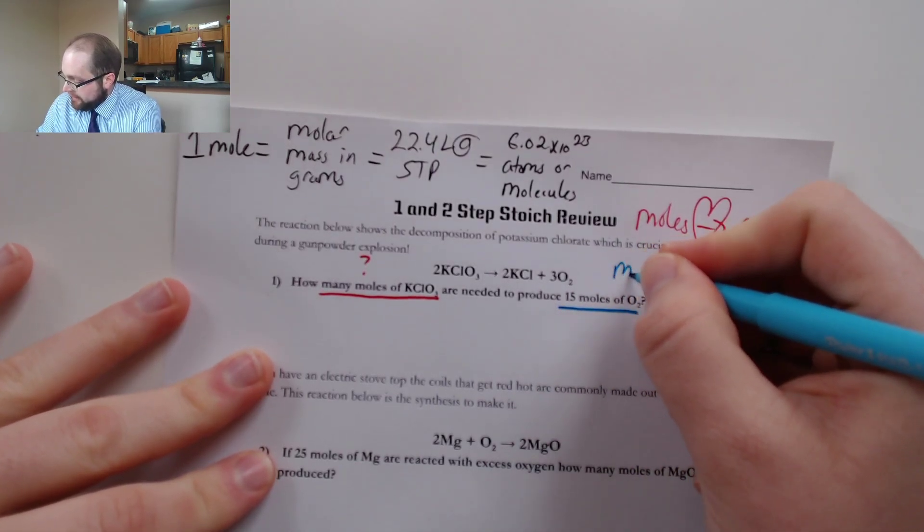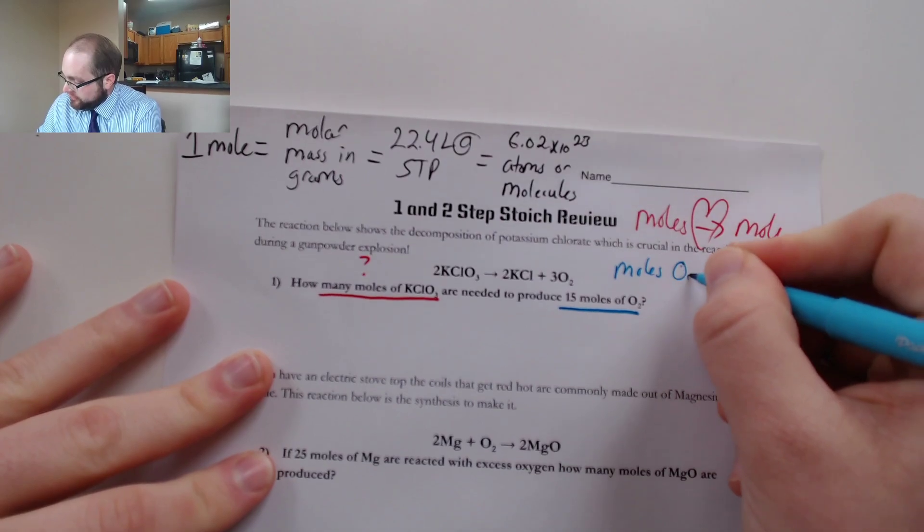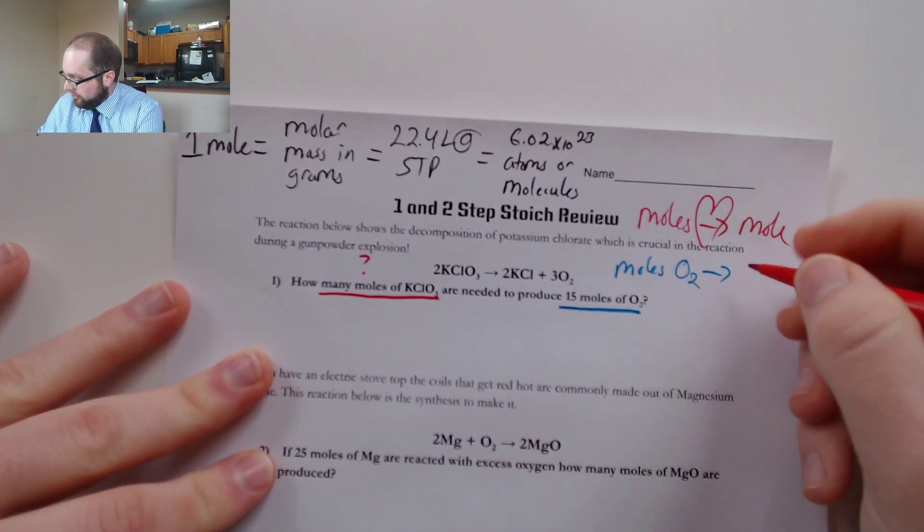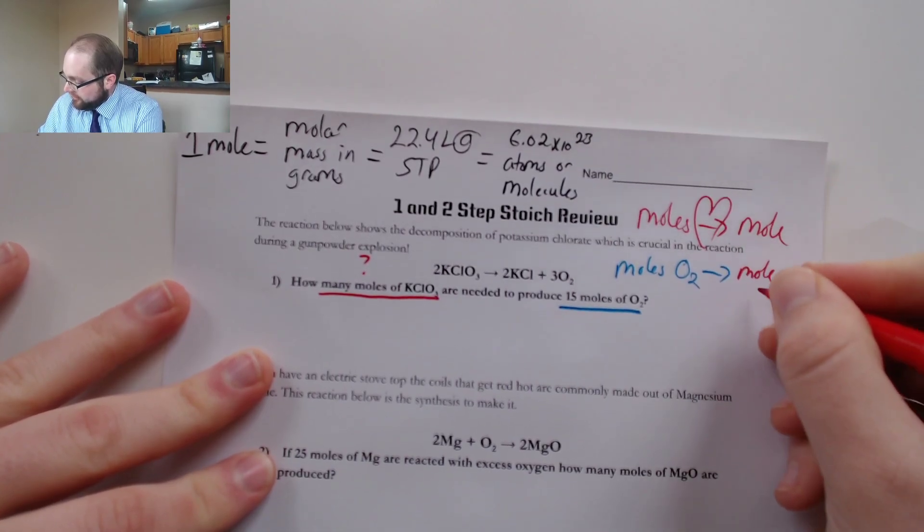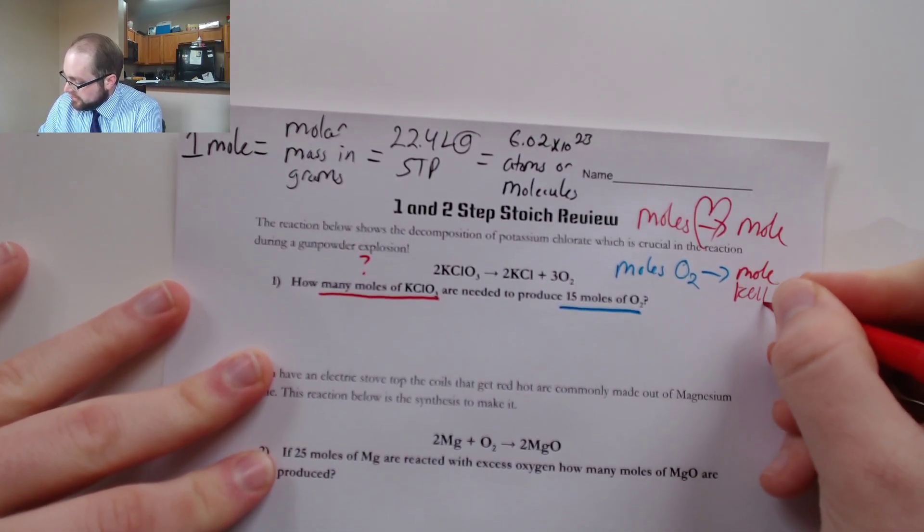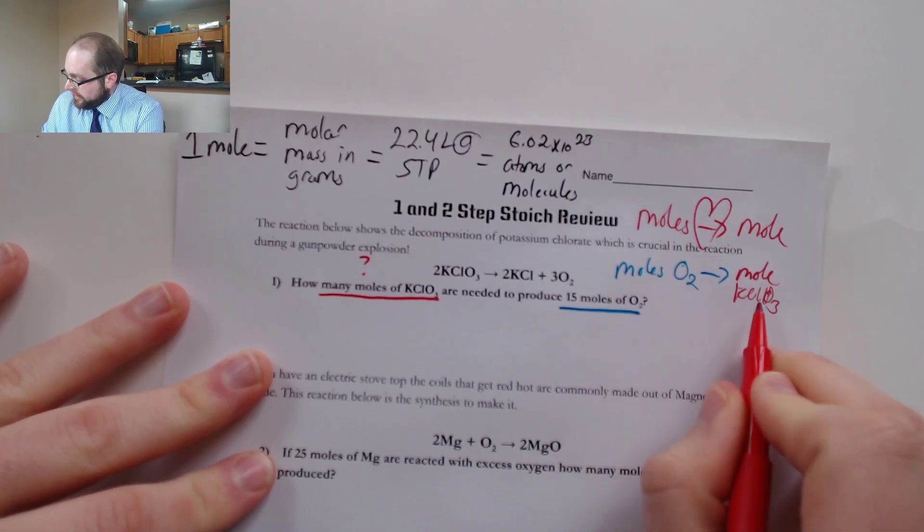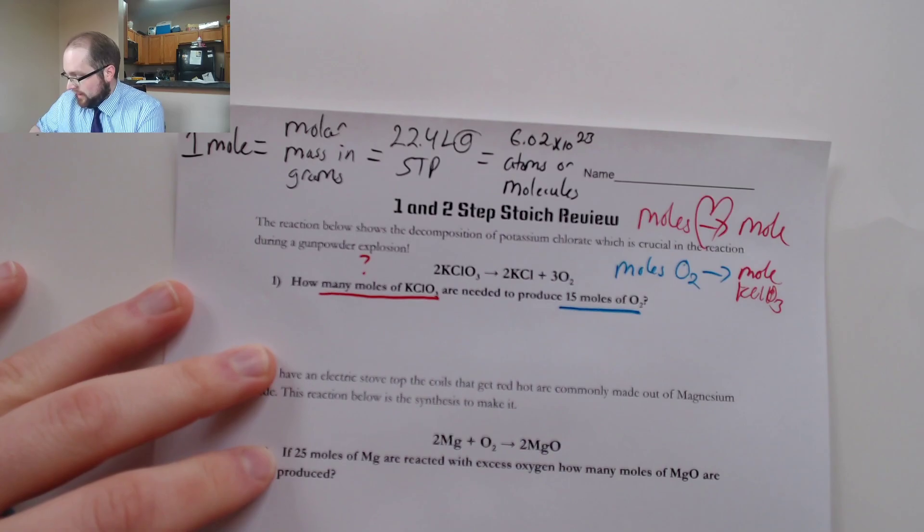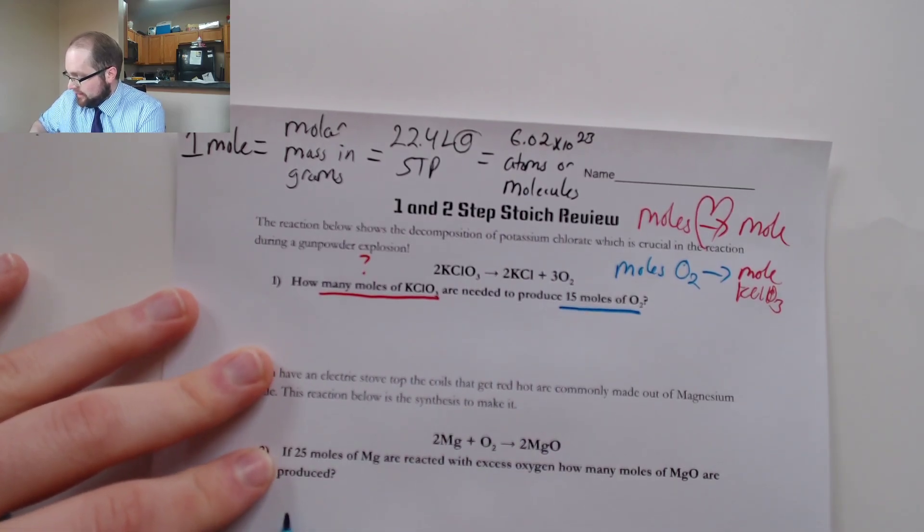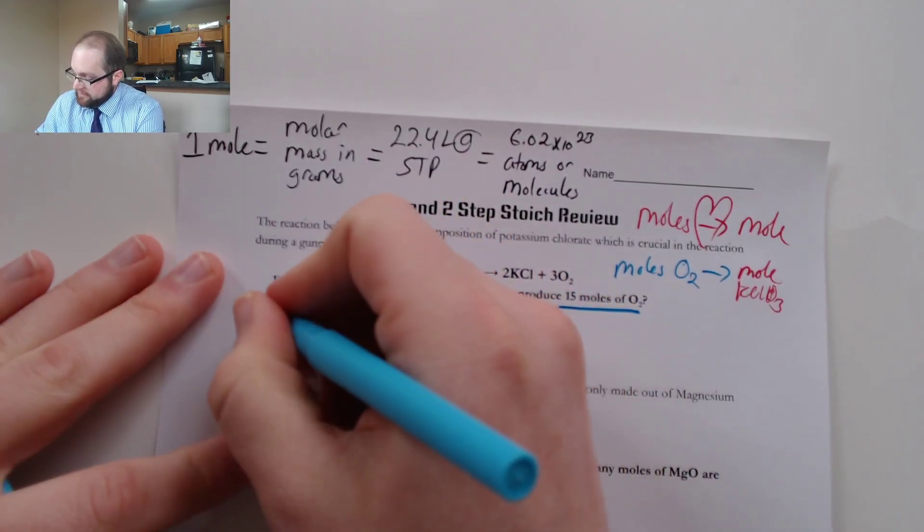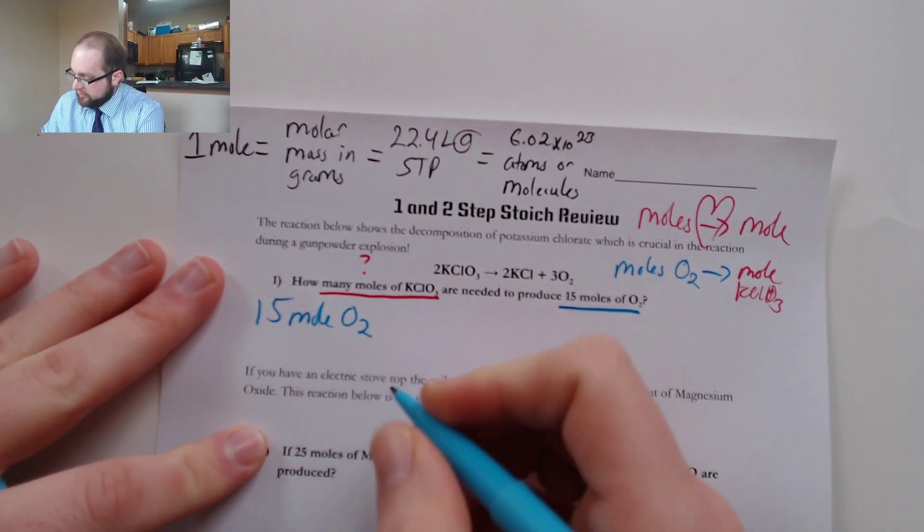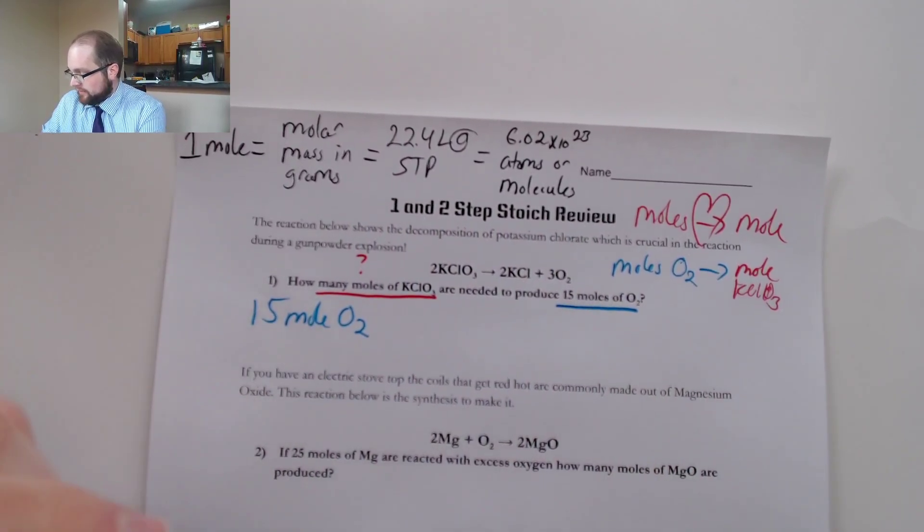So we're going to take our moles of O2 and we have to convert those into moles of our potassium chlorate. This is the heart of our stoichiometry and really that's all it's asking us to find, moles to moles. So we're going to make this nice and easy by starting with our 15 moles of O2, then setting up our conversion factor.